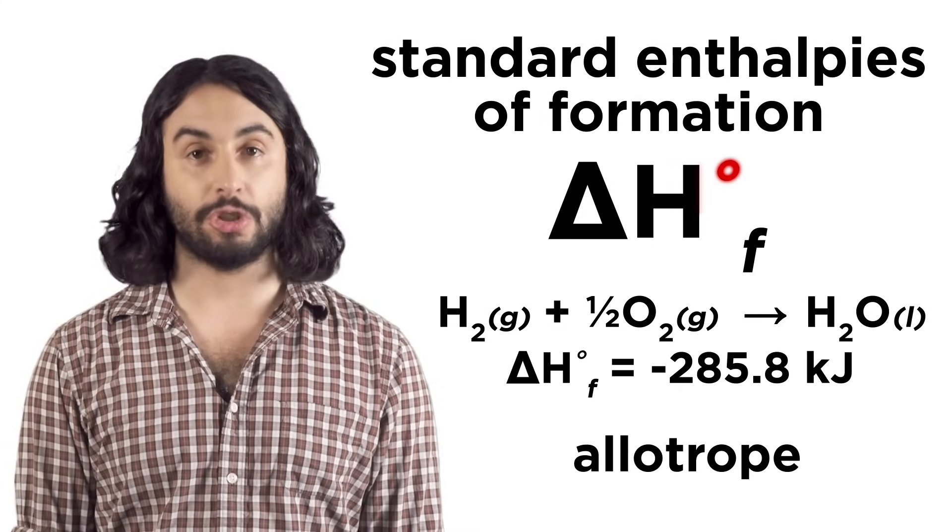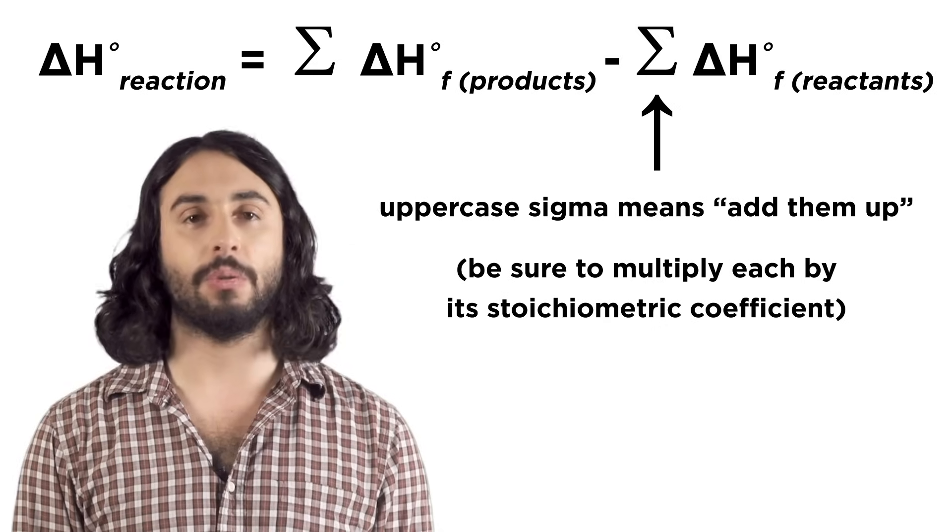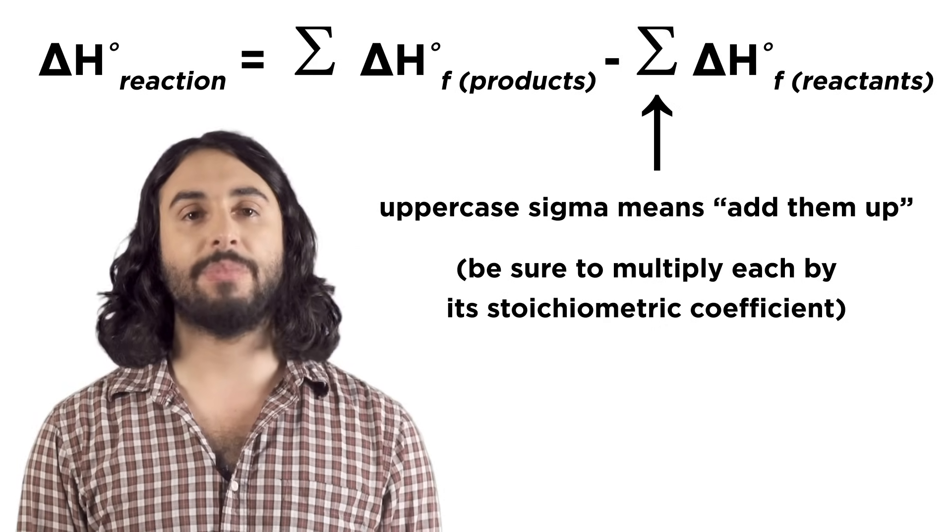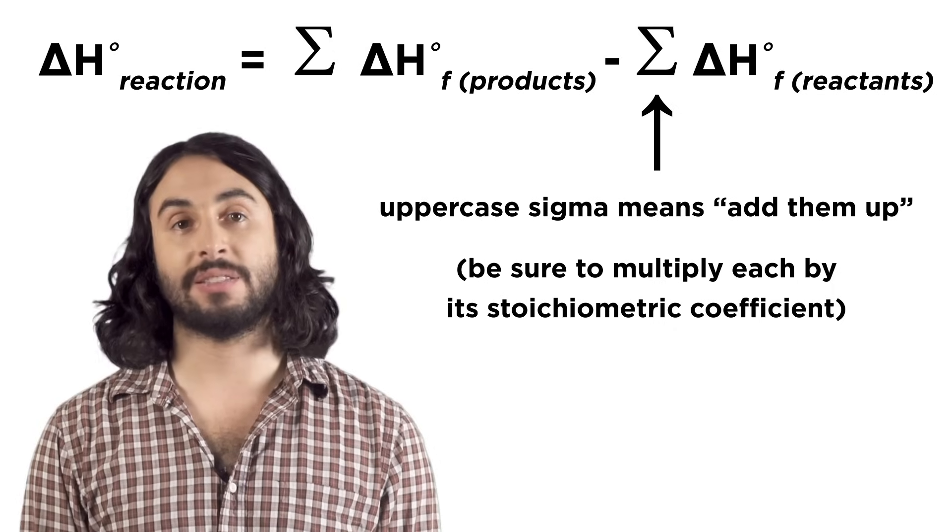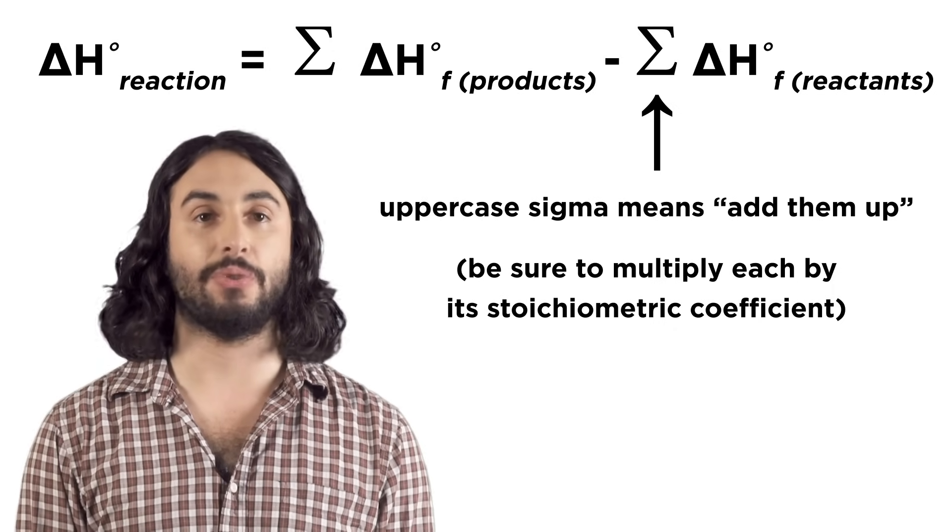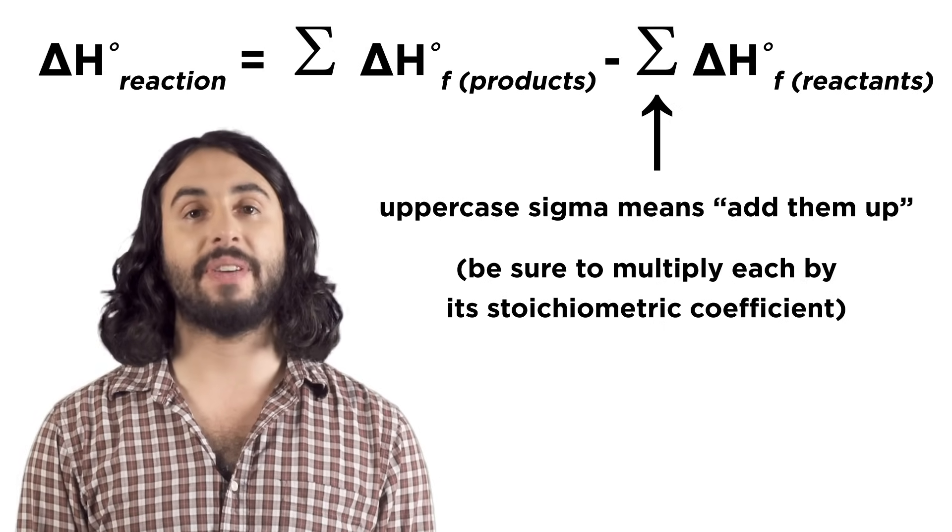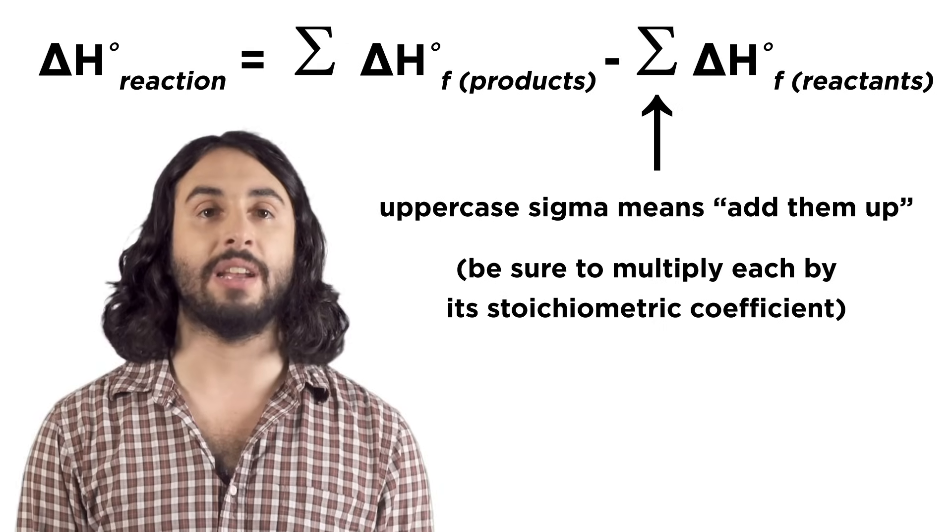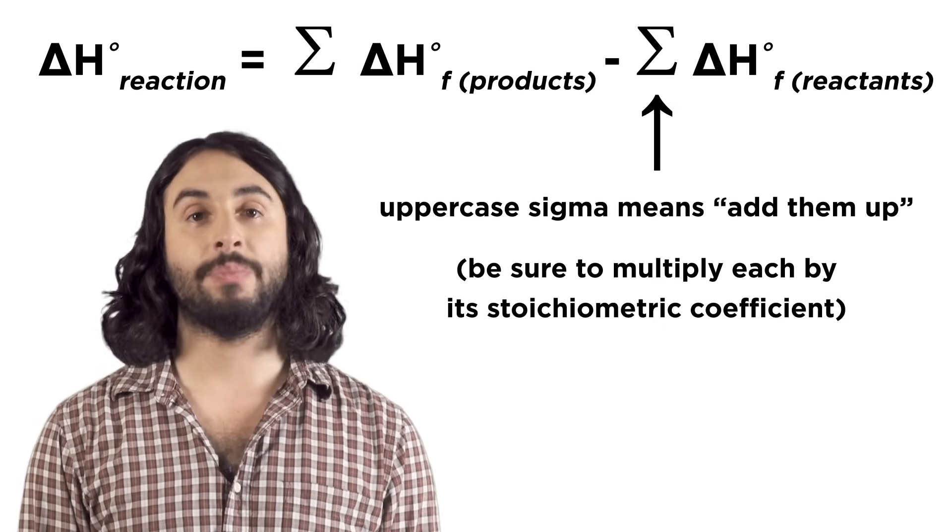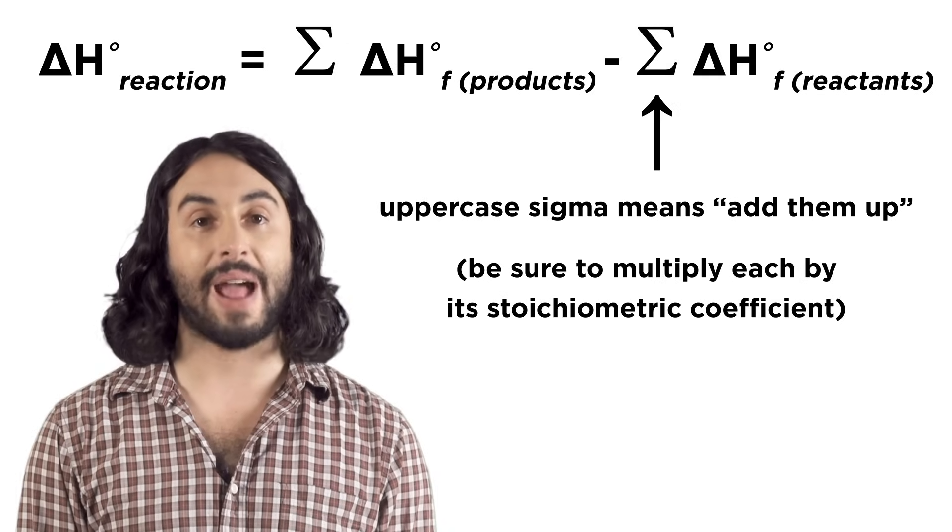We can calculate the change in enthalpy for a reaction by adding up the standard heats of formation of the products and then subtracting the sum of the standard heats of formation of the reactants. The heats of formation can be found in your textbook or online, and you just plug them in multiplying each value by the coefficients in the balanced equation.